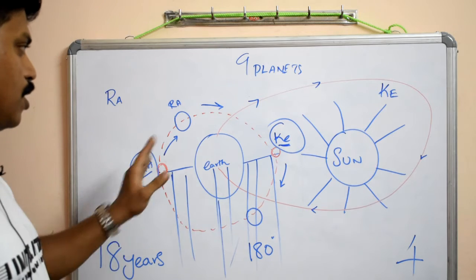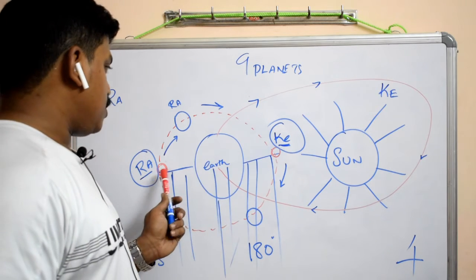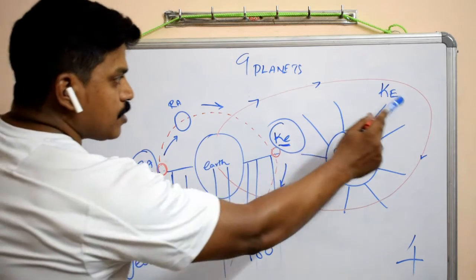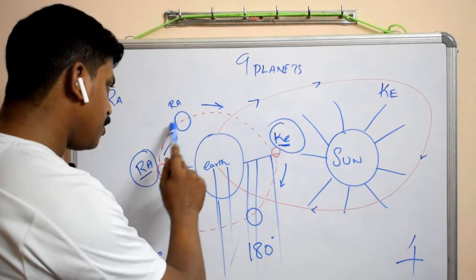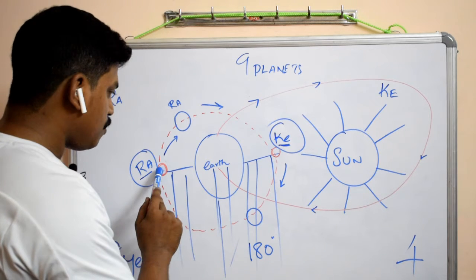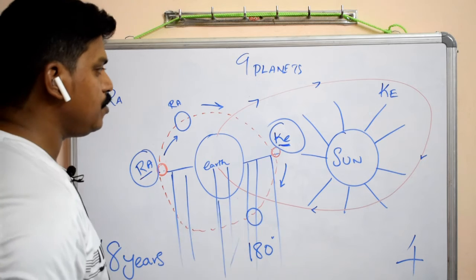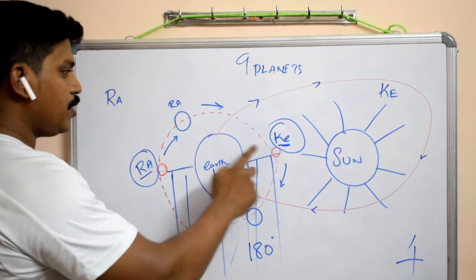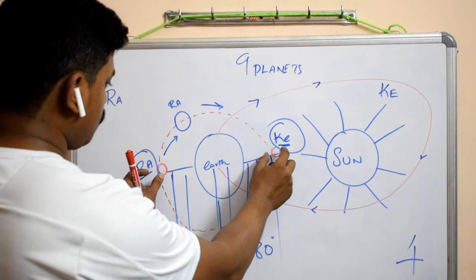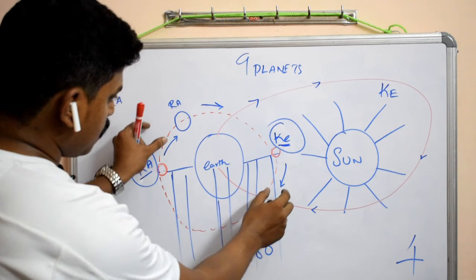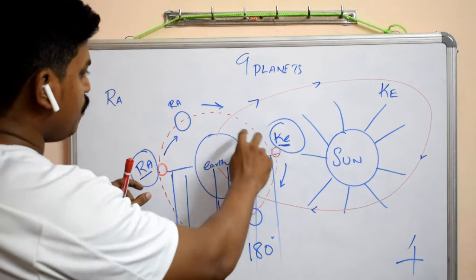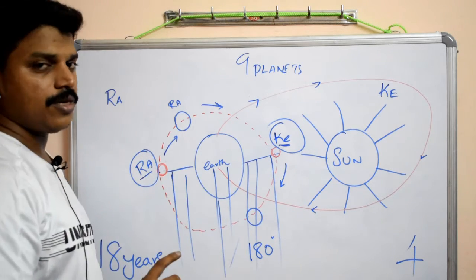This is the basic thing of Rahu and Ketu. Earth rotates our sun and around our Earth, there is an arbitrary point called two endpoints, black points that is Rahu and Ketu. And this Rahu and Ketu is nothing but 180 degrees opposite to each other, and it will rotate like this. It will take 18 years to complete a full 360 degree rotation around our Earth.